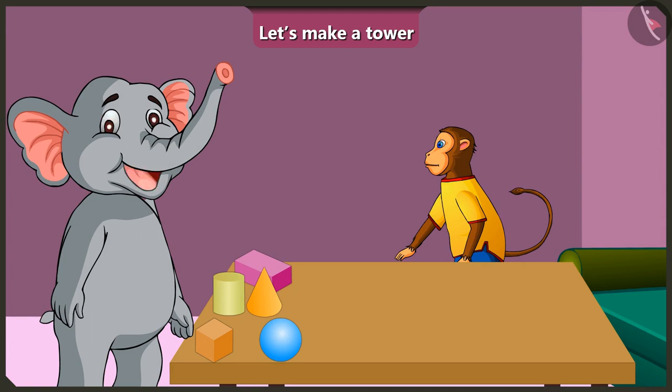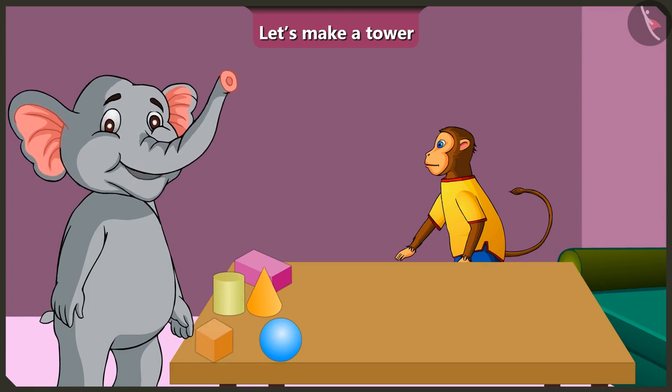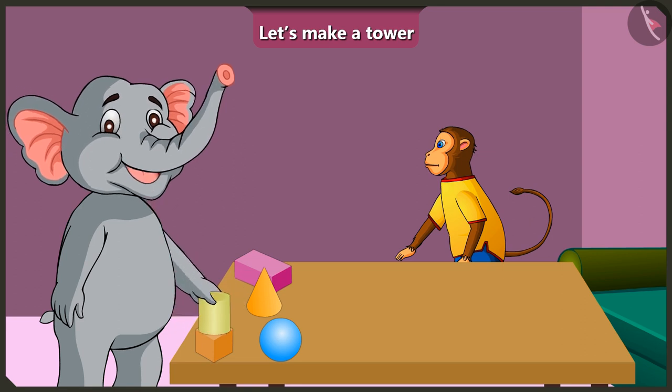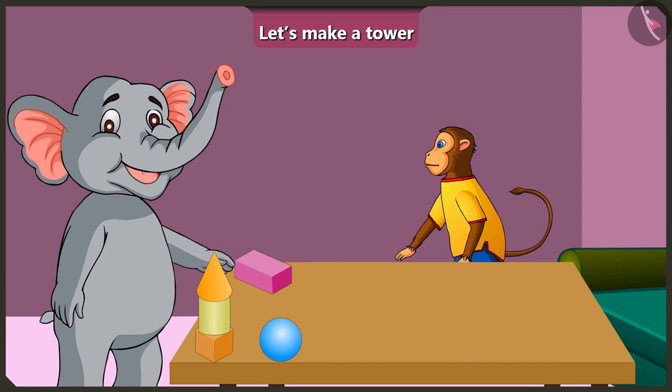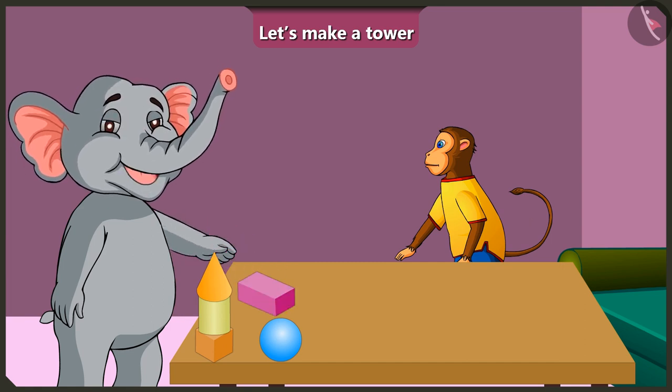Look, first I place the cube. Above it the cylinder. Above it the cone shape. Above it the cuboid. Oh oh oh, it fell down. Why did this happen?